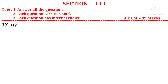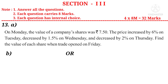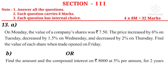Thirteenth question A: On Monday the value of a company's share was 7 rupees 55. The price increased by 6% on Tuesday, decreased by 1.5% on Wednesday, and decreased by 2% on Thursday. Find the value of each share when trade opened on Friday. Or 13B: Find the amount and the compound interest on 8,000 rupees at 5% per annum for 2 years compounded annually. Both from Chapter 5, Comparing Quantities Using Proportion.